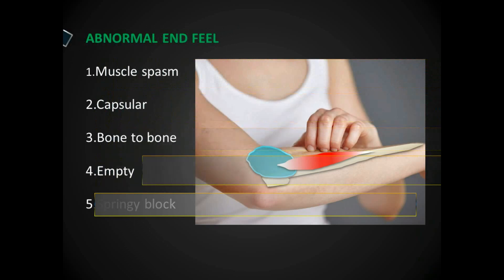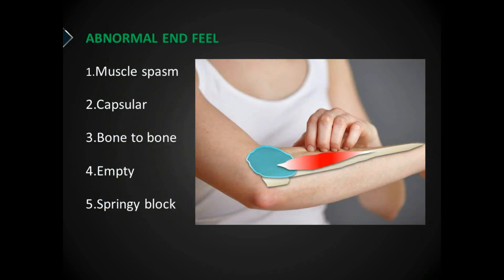There are five types of abnormal end-feels that have been reported: muscle spasm, capsular, bone-to-bone, empty, and springy. When you read these, you can understand that for the restriction of range of motion, these are the structures that are the reason why movement is getting restricted. But there are certain terms that will really confuse you, which we will explain right now.